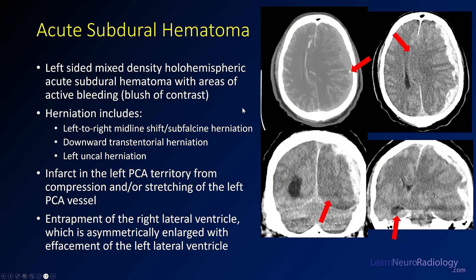This is an acute subdural hematoma crossing essentially the entire hemisphere. On CTA, there is a small area of active blush indicating active hemorrhage, which is a risk factor for poor prognosis. There's significant herniation, midline shift, and uncal herniation, and the left PCA territory infarct results from compression or stretching of that artery. The right lateral ventricle is a little enlarged because CSF is still being produced but the foramen of Monro is obstructed by mass effect, causing hydrocephalus on the contralateral side despite the compression elsewhere.